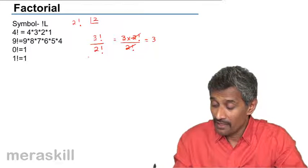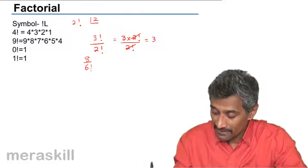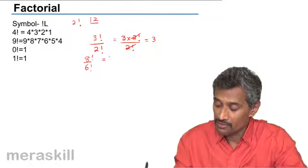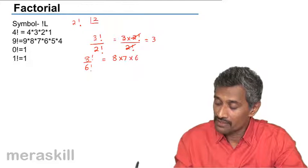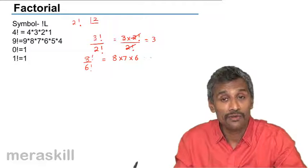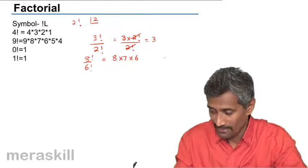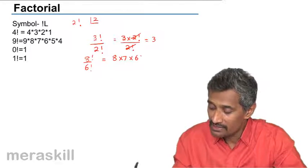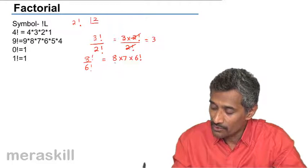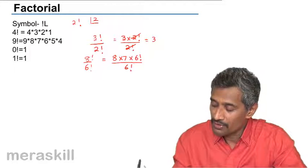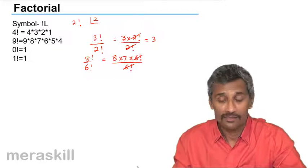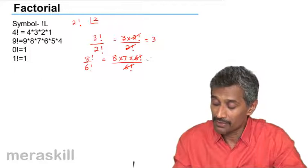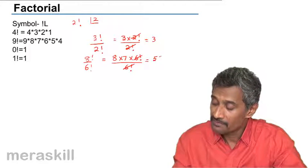Suppose I say 8! divided by 6!. 8! = 8 × 7 × 6!, so 8!/6! = 8 × 7 × 6!/6! = 8 × 7 = 56.